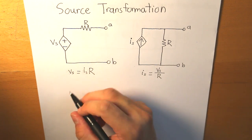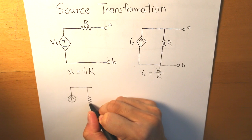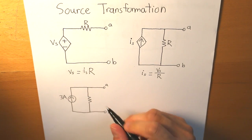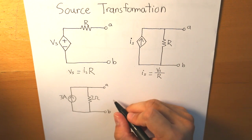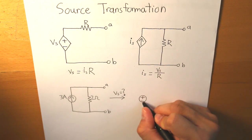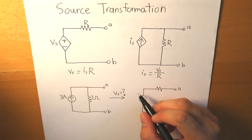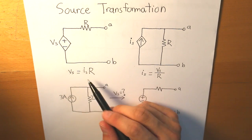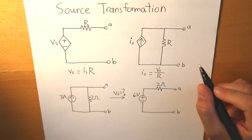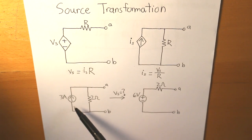Now I'm going to make a numerical example. Say we have a current source of 3 amps and a resistor value of 2 ohms. The question is: what is VS going to be? VS is going to be 6 volts, because we take the equation IS times R — IS is 3 amps, R is 2 ohms — and 3 times 2 equals 6 volts. The resistor remains 2 ohms. That is what our circuit looks like when we use source transformation to go from a current source to a voltage source.